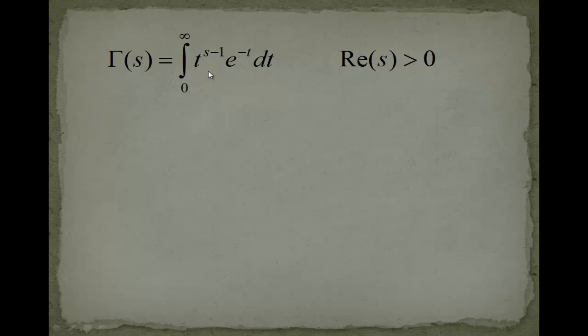Now what did Gauss do to get his representation of the gamma function? He just replaced this e to the minus t with the limit representation of the exponential function which looks like this. e to the minus t is equal to the limit n to infinity 1 plus minus t over n to the nth power raised to the nth power.